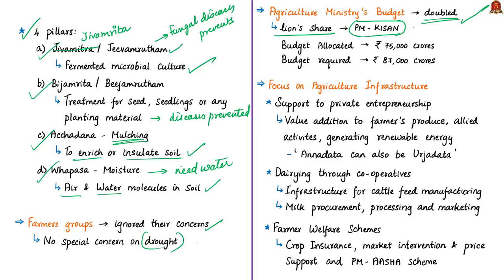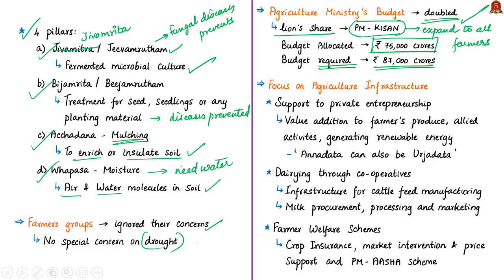The lion's share of the agricultural ministry's budget is meant for the single PM Kisan scheme — an income support scheme for small and marginal farmers announced in the interim budget before the elections. However, there are problems: one election promise and cabinet decision was to expand PM Kisan to all farmers, but this does not seem to be reflected in the budget. The allocation for the scheme is only ₹75,000 crore, whereas the amount needed to cover all farmers was estimated by the government to be around ₹87,000 crore — leaving a shortfall of almost ₹12,000 crore.